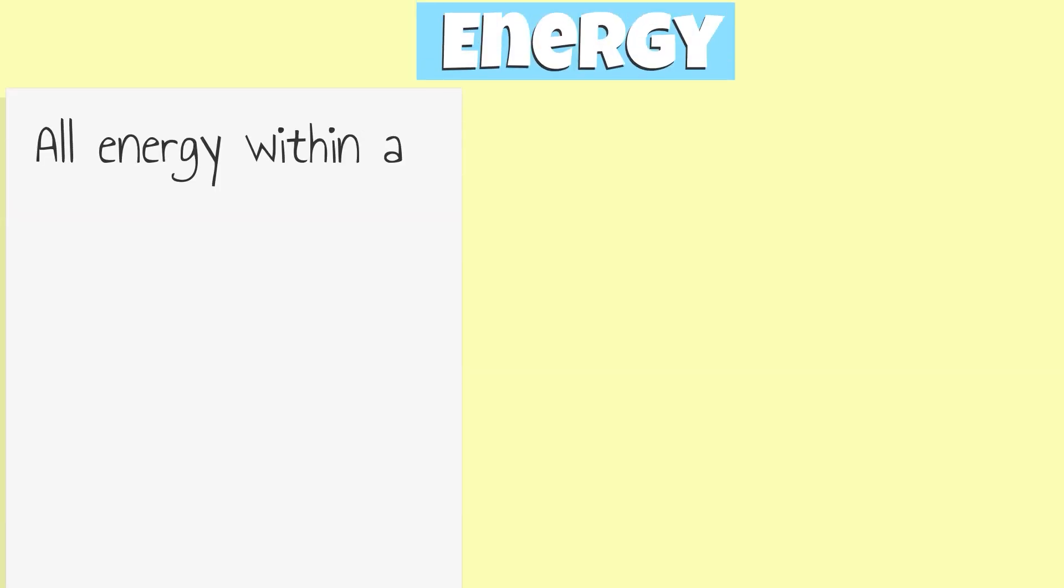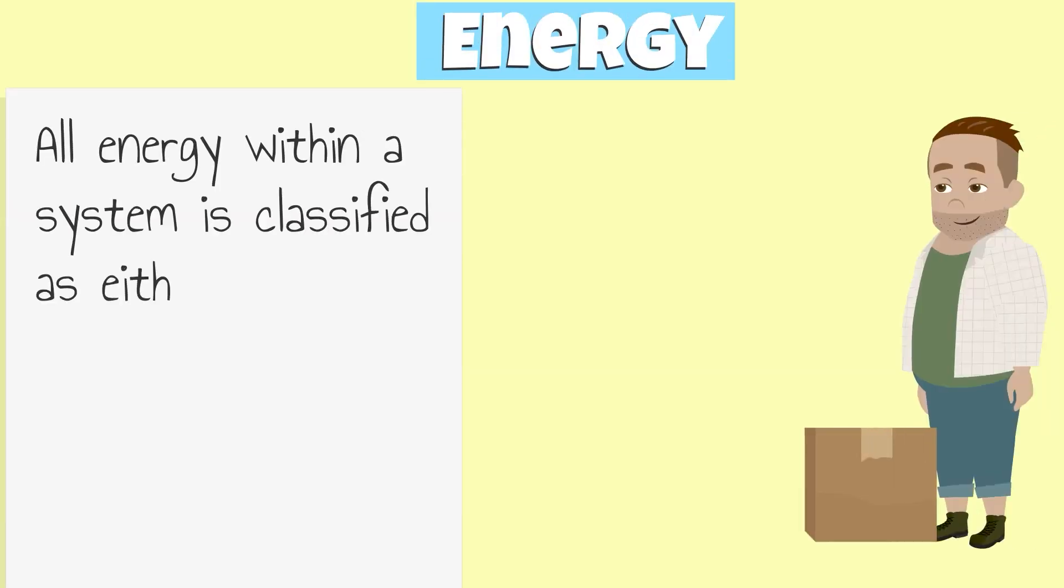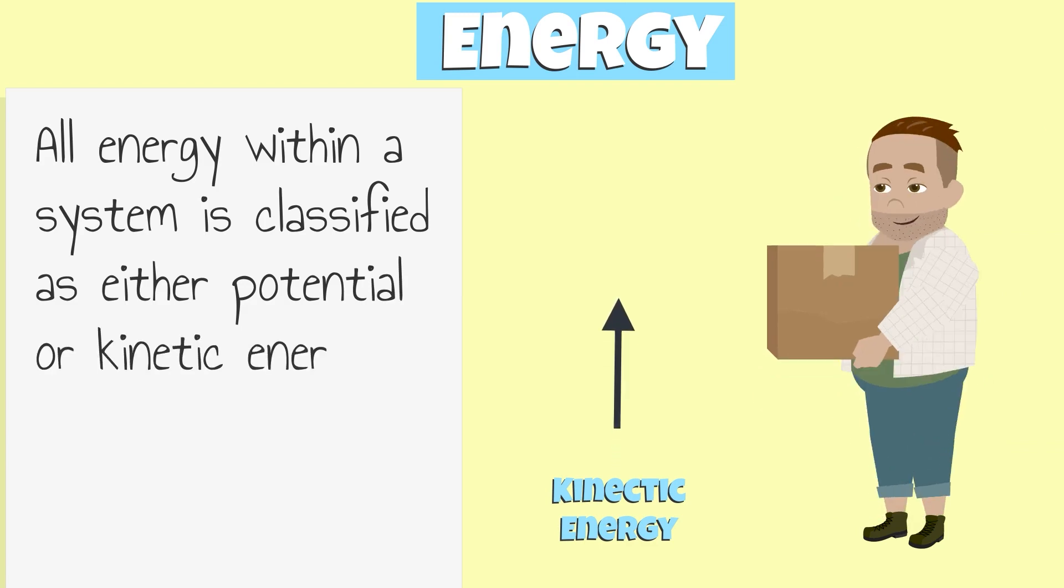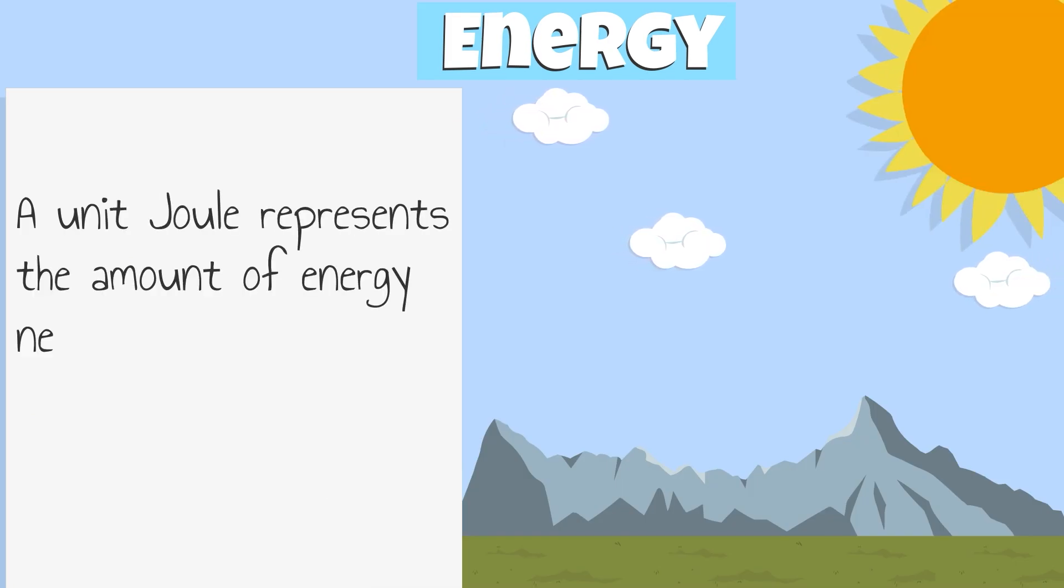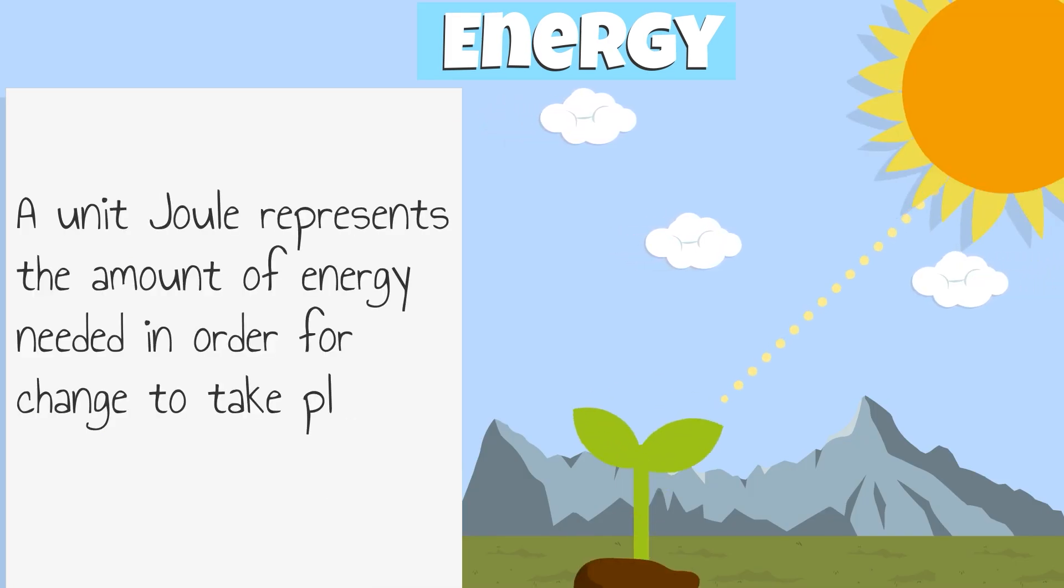All energy within a system is classified as either potential or kinetic energy and is measured in the unit joule. A unit joule represents the amount of energy needed in order for change to take place within a system.